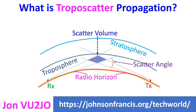The angle between the two radio horizon rays is known as the scatter angle. The volume of intersection of the two beams is known as the scatter volume. Scatter volume will be high for a low gain antenna with a wider beam, and lower for a high gain antenna with a narrow beam.